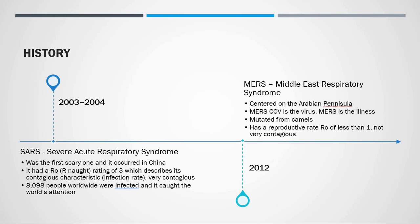A little history. In 2003 to 2004, we had SARS — the original one, Severe Acute Respiratory Syndrome. It was the first scary one, occurred in China. It had an R-naught rating of 3, which describes its contagious characteristics — that's its infection rate. It was very contagious. We're going to talk about R-naught a little bit later. 8,098 people worldwide were infected, and it caught the world's attention.